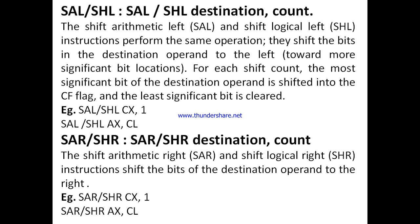For each shift count, the most significant bit of the destination operand is shifted into the carry flag, and the least significant bit is cleared. For example: SAL or SHL with destination and count 1 — meaning shift left one time. We can also put the count value directly and shift the multiple times.